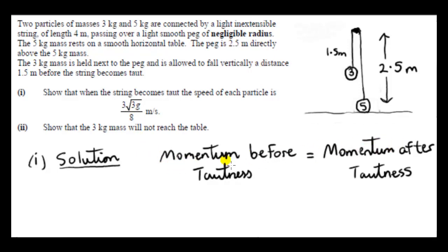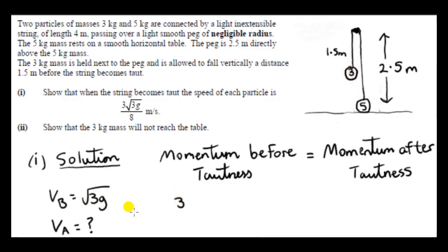It turns out we can use conservation of momentum, even though there is an external force acting in the vertical direction. We look at the momentum of the 3 kg mass immediately before the string becomes taut: mass 3 times velocity √(3g). The 5 kg mass hasn't moved, so its momentum is 0 — mass 5 times velocity 0. This gives the total momentum of the system; we ignore the string since its mass is negligible.